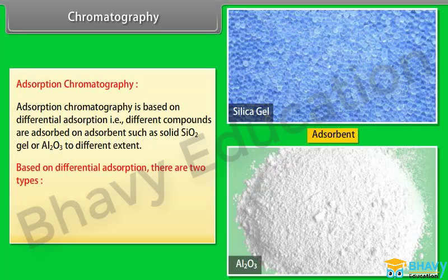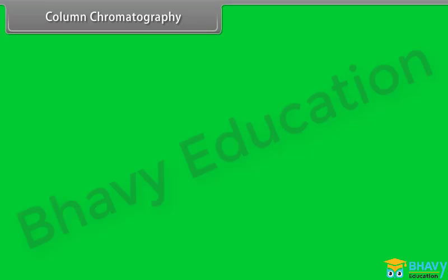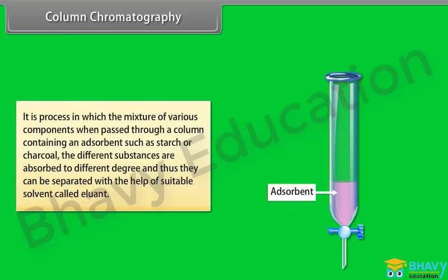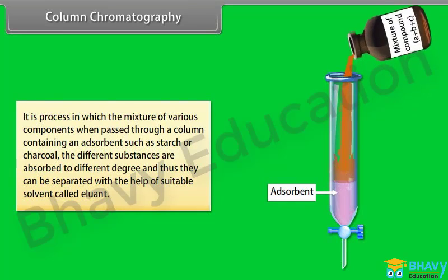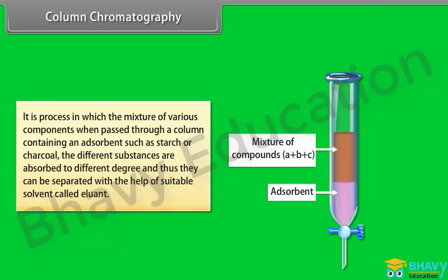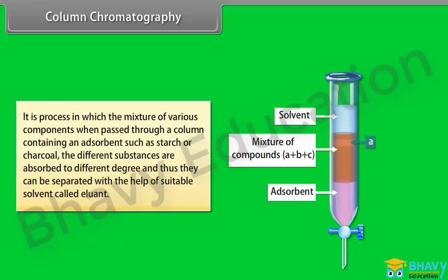Based on differential adsorption, there are two types: column chromatography and thin layer chromatography. Column chromatography is the process in which a mixture of various components is passed through a column containing an adsorbent such as starch or charcoal. The different substances are adsorbed to different degrees, and can be separated with the help of a suitable solvent called the eluent.